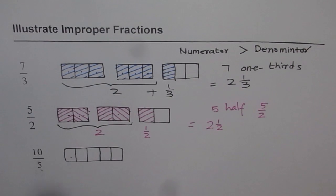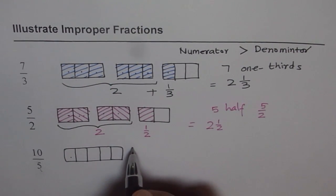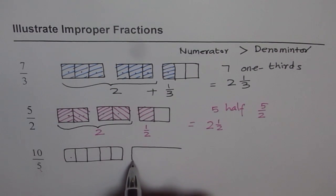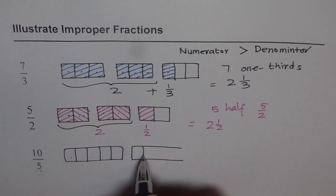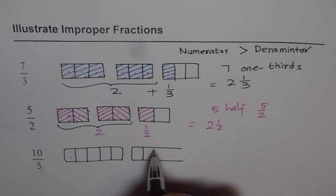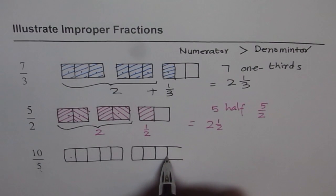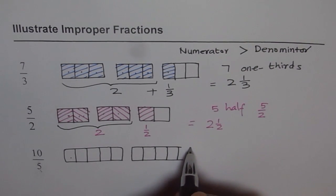I need 10 fifths. So that means I have to make another rectangle like this. I am keeping it open so that I have provision to extend. 1, 2, 3, 4. Do you see that? 5.